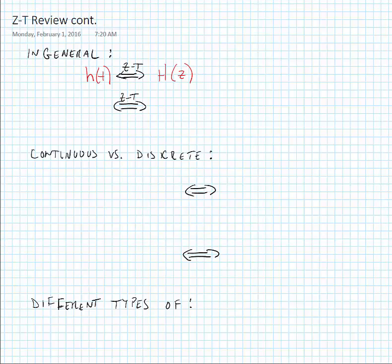If we have any delay in our time domain signal, for instance, H of t minus nT_s, the sampling time, this is equivalent to saying that this is z to the minus n, where n is the delay in samples times H of z.